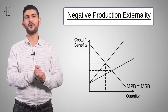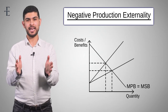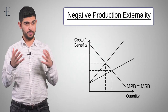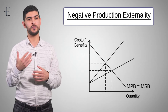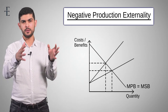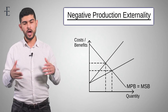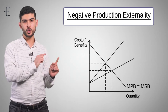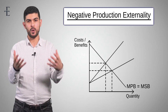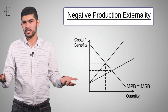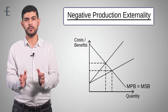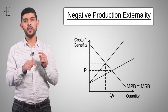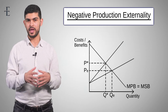Step four: negative externalities are always where you are doing too much of something that is bad, whereas a positive externality is where you're doing too little of something good. Since we're doing a negative externality, we're doing too much. On the quantity axis there are two potential quantities — if we're doing too much, the second one must be the equilibrium. Label that QE, and the adjoining price PE. The other quantity call Q* and P* — we'll explain what that is later.